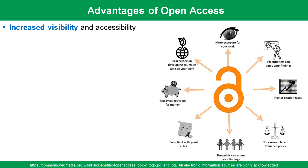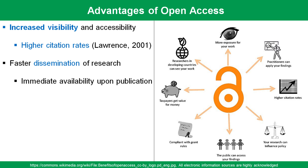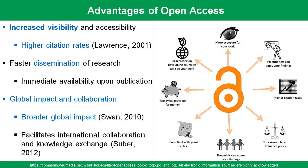Open access offers several advantages, including increased visibility and accessibility. Studies have shown that open access articles receive higher citation rates. Furthermore, immediate and unrestricted access to research facilitates faster dissemination, accelerating the pace of scientific discovery. Moreover, open access platforms promote global impact and collaboration. Researchers worldwide can access and build upon each other's work, fostering international collaboration and knowledge exchange. The democratization of information enhances the overall impact of research on a global scale.